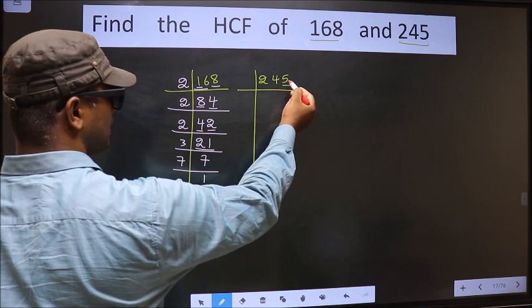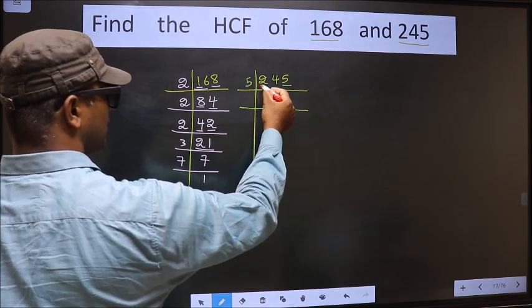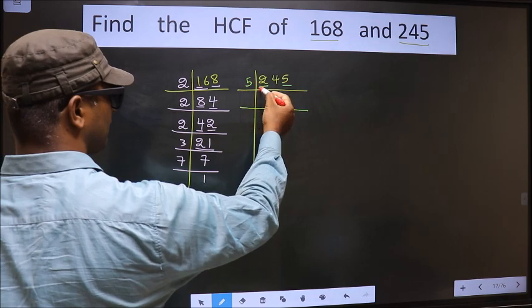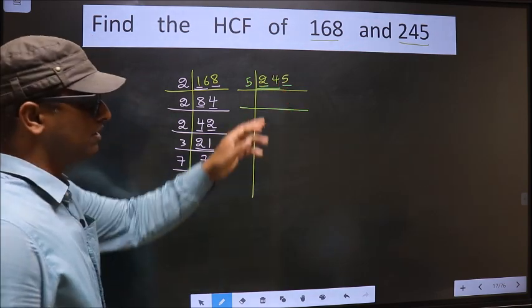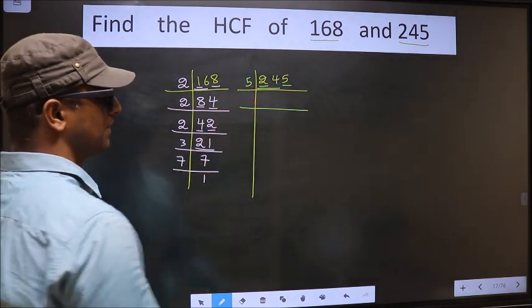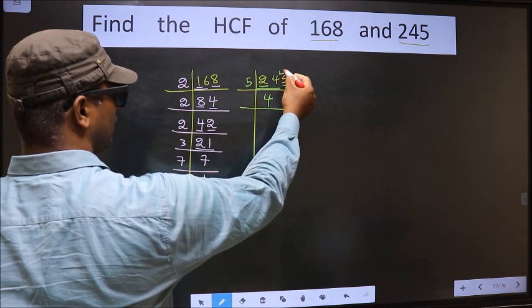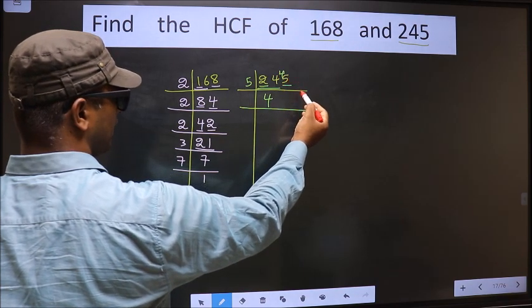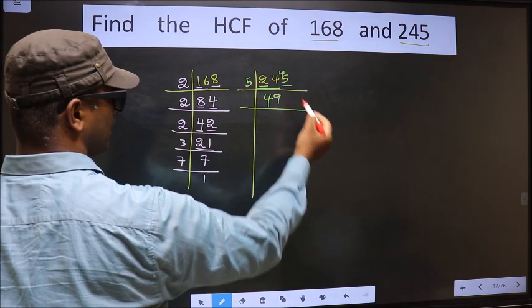For this number, last digit is 5, so we take 5 here. The first number is 2, smaller than 5, so we take 2 numbers that is 24. A number close to 24 in 5 table is 5, 4 is 20. 24 minus 20 is 4, carried forward making it 45. When do we get 45 in 5 table? 5, 9 is 45.